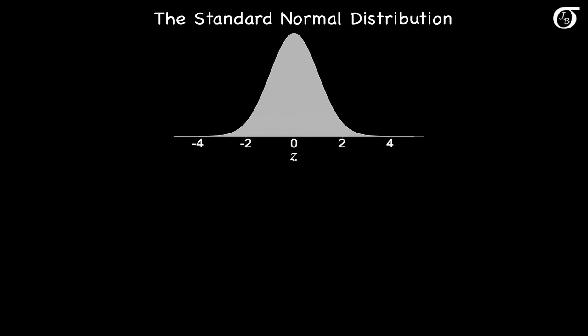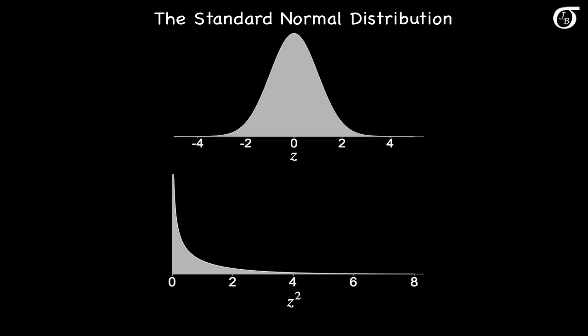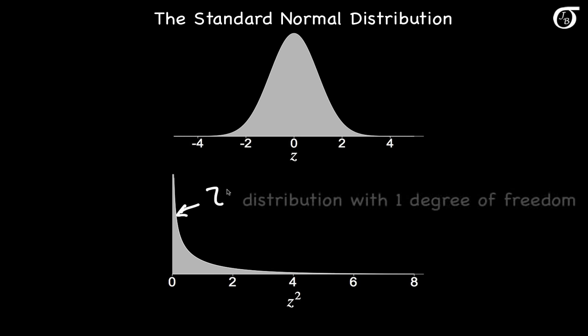Let's take a look at a couple of plots. Here's the standard normal distribution. If z has this distribution and we square z, then z-squared has this distribution, which is a chi-square distribution with 1 degree of freedom.